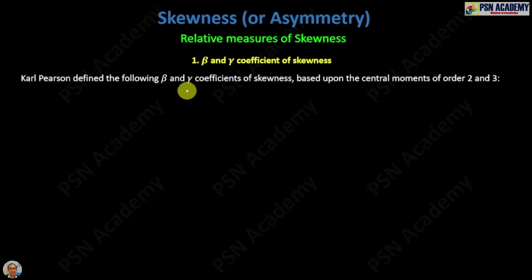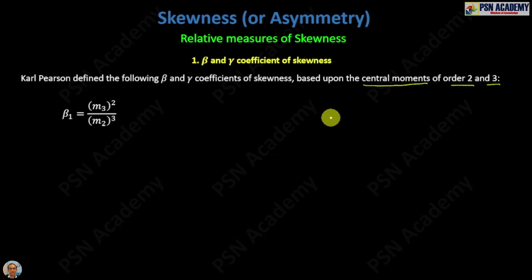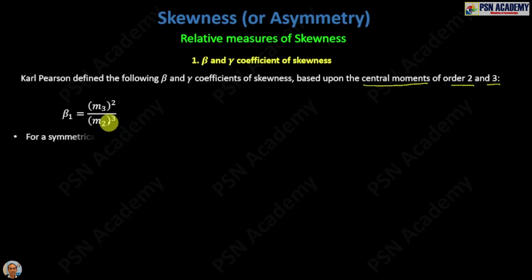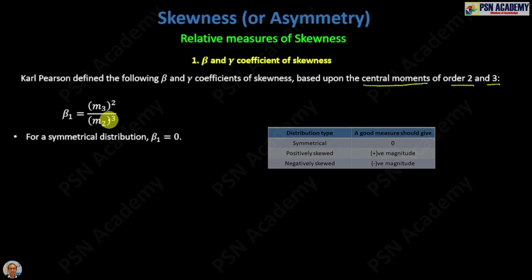We start with the beta and gamma coefficient of skewness. Karl Pearson defined the beta and gamma coefficient of skewness based upon central moments of order two and three. Beta one equals m₃ squared — that is, the central moment of order three, squared — divided by the central moment of order two, cubed.